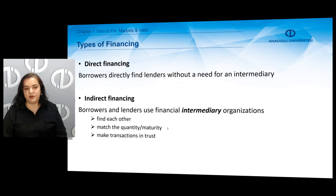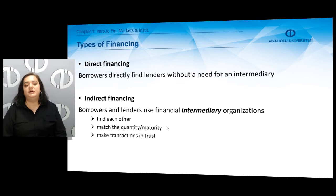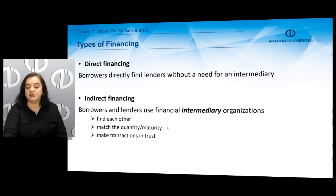In the financial system we can observe two types of financing: direct financing or indirect financing. In direct financing, borrowers directly find lenders without a need for an intermediary. In indirect financing, borrowers and lenders use financial intermediary organizations to find each other, to match the quantity and maturity of transferred funds, and to ensure that transactions are made in trust.